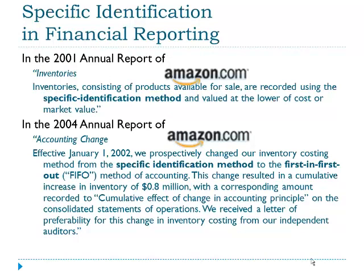Specific identification was surprisingly found in the 2001 annual report of Amazon.com. In that annual report, they stated that inventories consisting of products available for sale are recorded using the specific identification method and valued at the lower of cost or market. By 2004, Amazon.com changed, stating: effective January 1, 2002, we prospectively changed our inventory costing method from the specific identification method to the first-in-first-out method. This change resulted in a cumulative increase in inventory of $0.8 million recorded as a cumulative effect of a change in accounting principle. They received a letter of preferability for this change from their independent auditors. It's hard to believe Amazon tried to maintain specific identification at all given the complexity of their business.